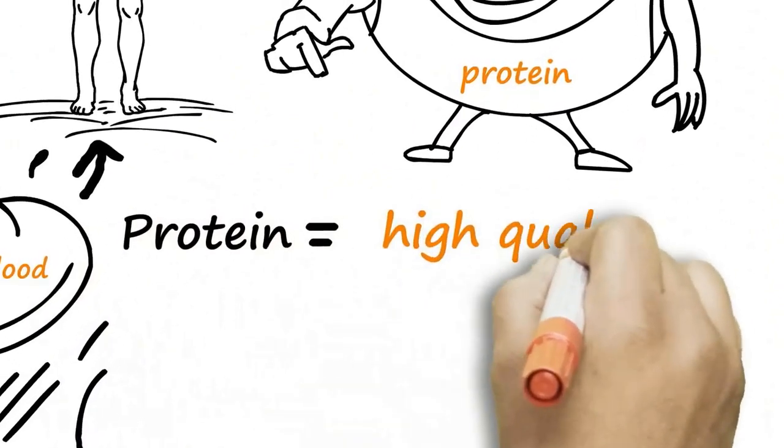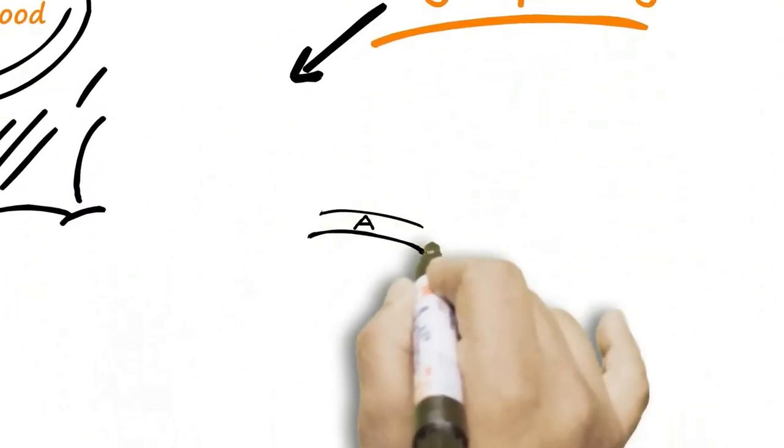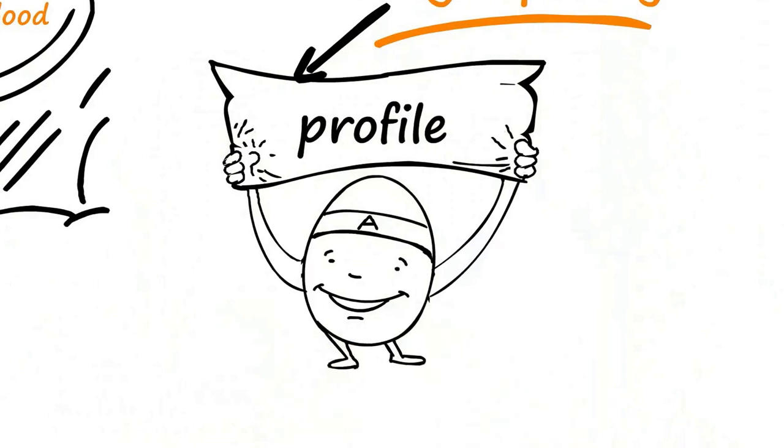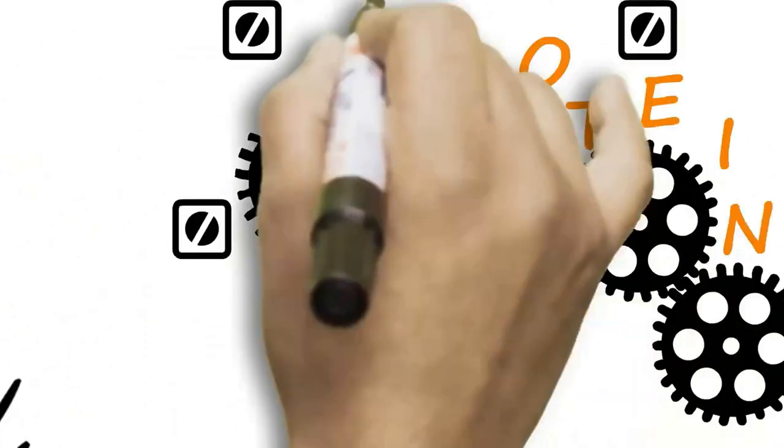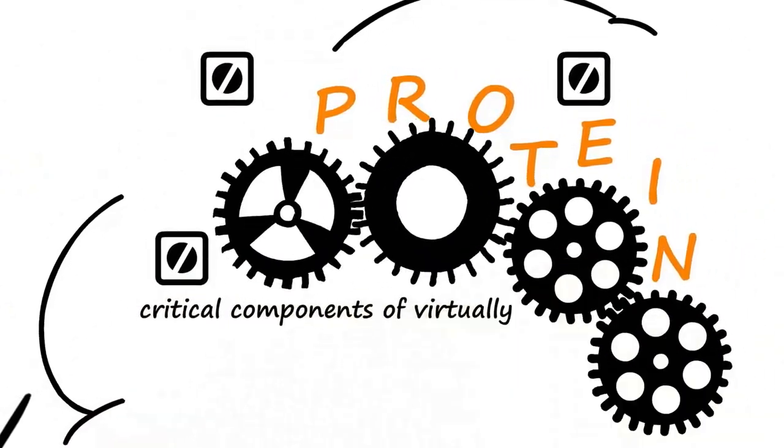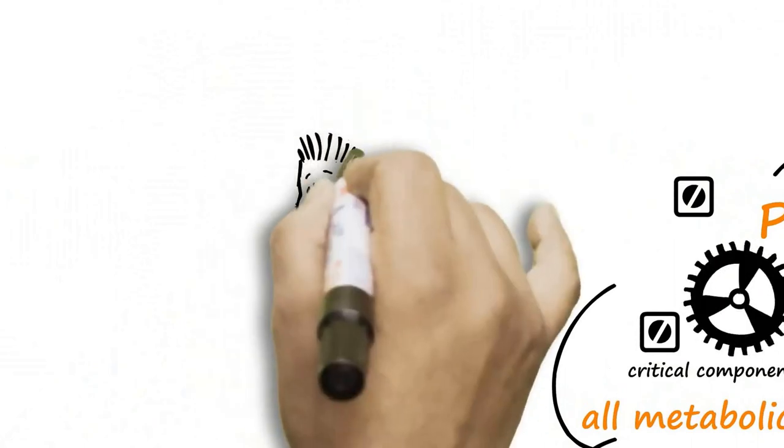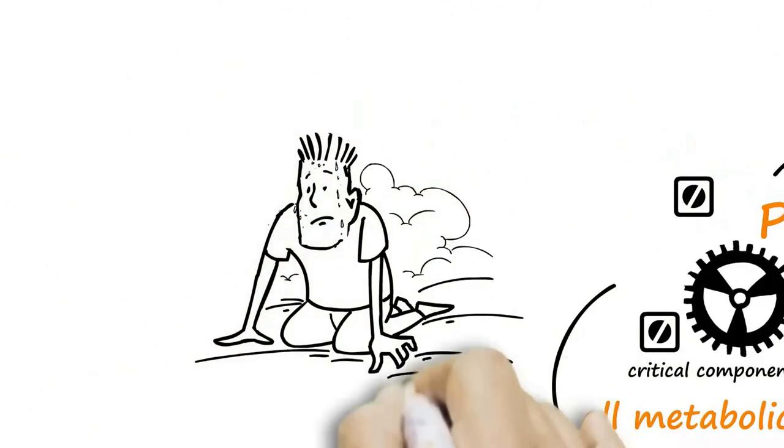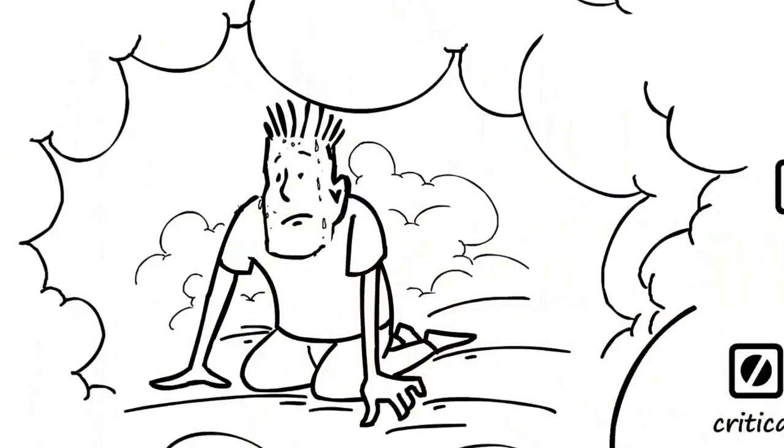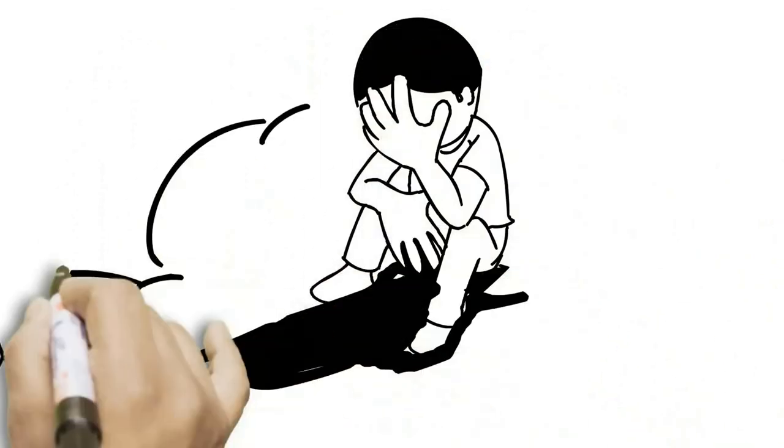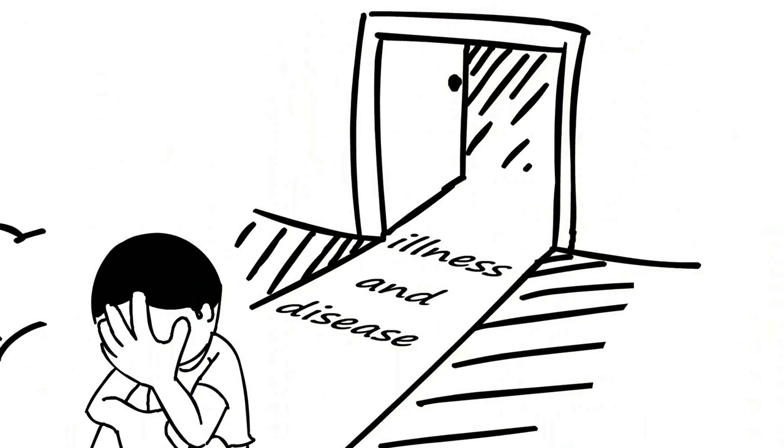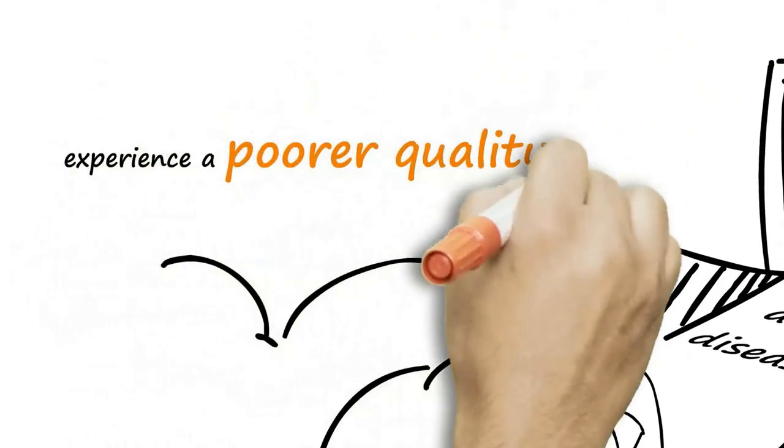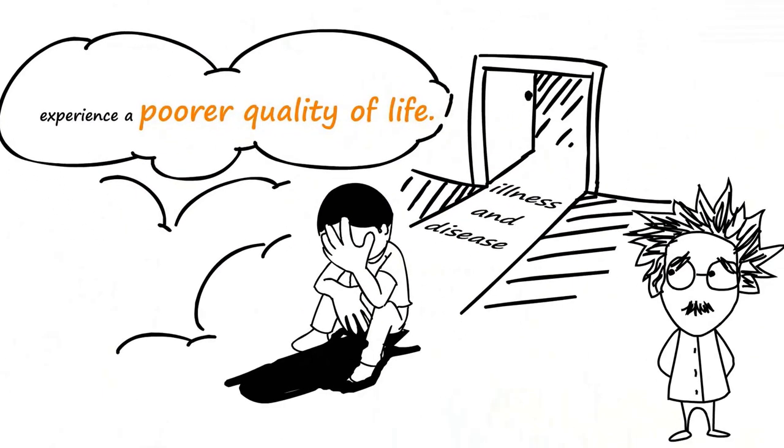Protein is termed high quality if it has an amino acid profile and molecular shape that renders it valuable for human nutrition. Proteins are a prime component in all cells of the human body and are critical components of virtually all metabolic processes. If you don't consume enough quality protein, your body can't function properly. Your energy and brain function will sink. You open the door for illness and disease, and you will definitely age faster and experience a poor quality of life. Not good!